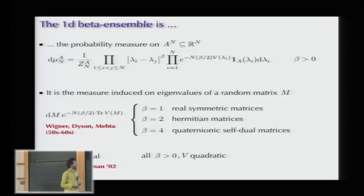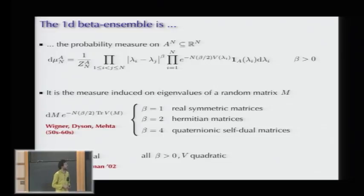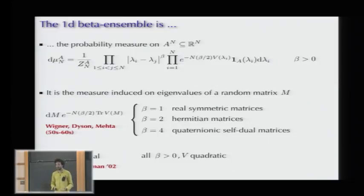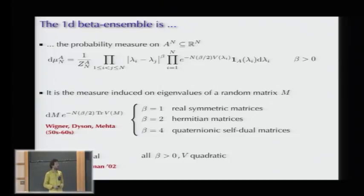This type of problem appears in random matrix theory: if you take a Hermitian random matrix with this distribution, this is the distribution induced on eigenvalues for beta equals 2. For real symmetric matrices or real quaternionic dual matrices, you get the same type of distribution with exponents beta equal to 1 and 4. In general, this is not related to a random matrix ensemble for all values of beta, but Dumitriu and Edelman found a tridiagonal matrix M whose eigenvalues, with a well-chosen distribution on entries, are distributed like this.